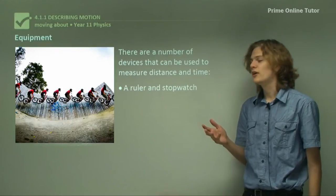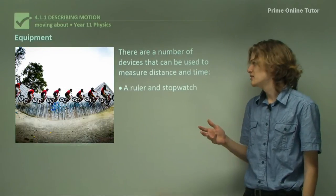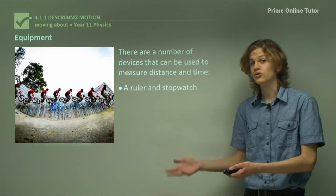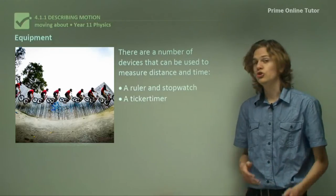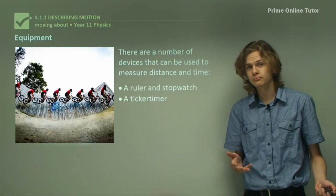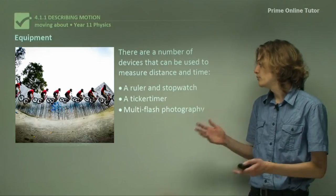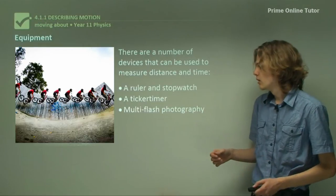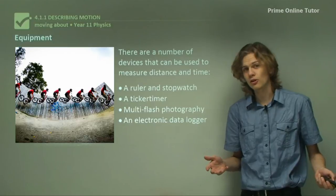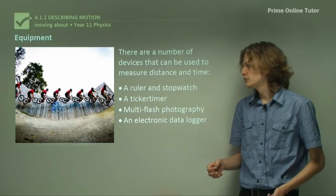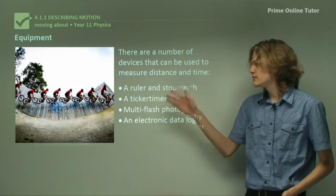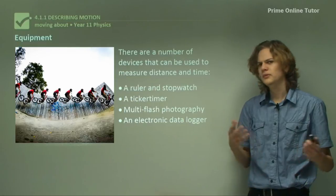Now, there are a number of different devices that can be used to measure distance and time. We could use a ruler and a stopwatch. We could use a ticker timer, which you probably have at your school laboratory. We could use multi-flash photography, or we could use an electronic data logger. So now let's take a look at each one of these various devices in a little more detail.